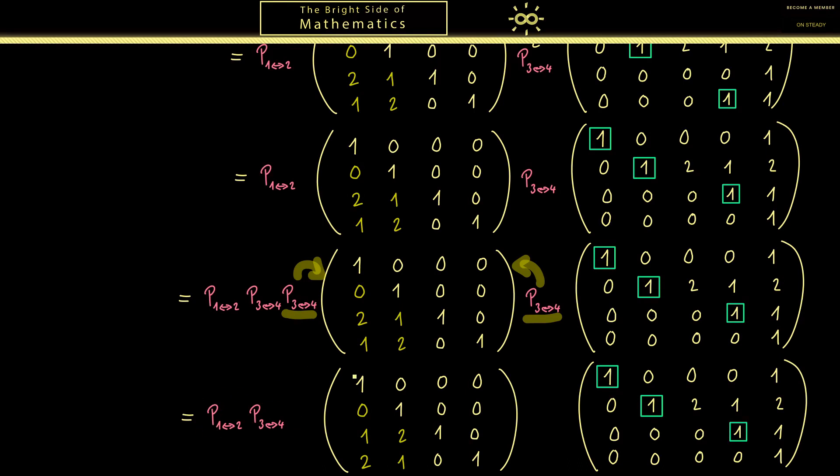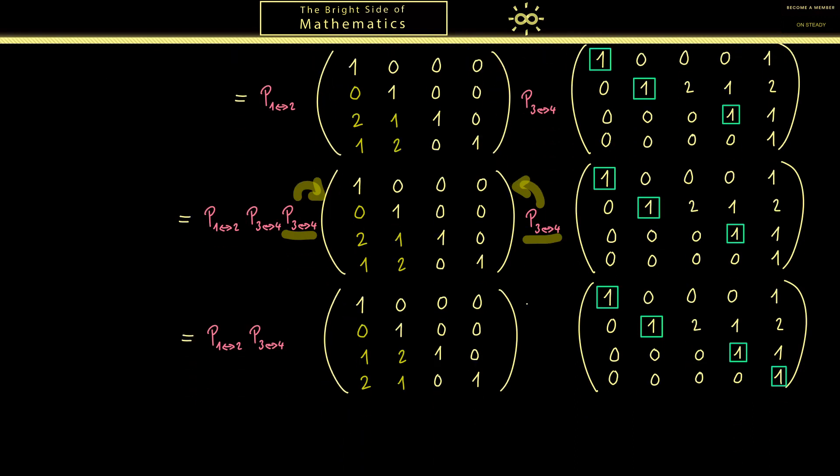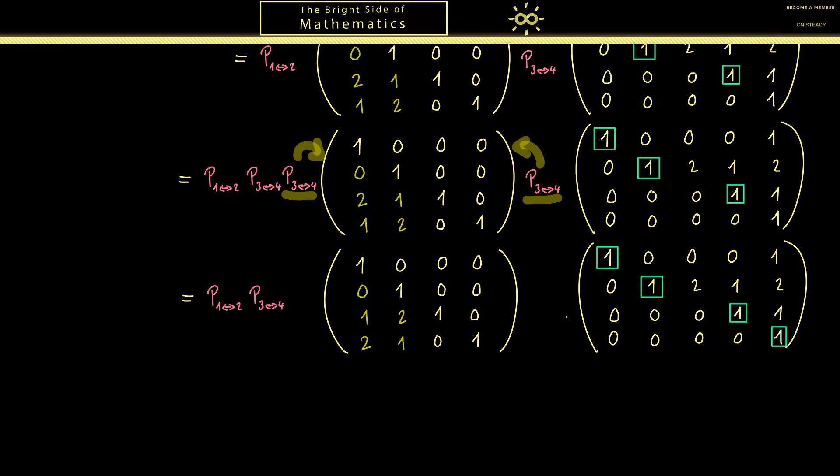Okay, now that everything is in the right order we can continue our procedure. This means that we want to generate a zero here, but it's already there, which means that we are finished with this column. In the next column we then find the pivot, which is here, but we don't have to generate zeros anymore. Indeed this was our last step in the whole calculation. We have found the row echelon form here on the right hand side.